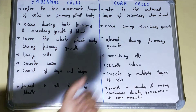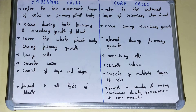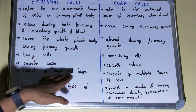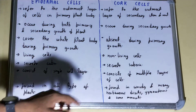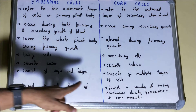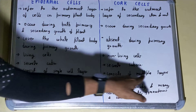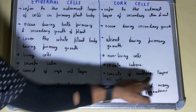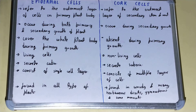Epidermal cells secrete cutin, whereas cork cells secrete suberin. Additionally, epidermal cells consist of a single cell layer, whereas cork cells consist of multiple layers of cells.